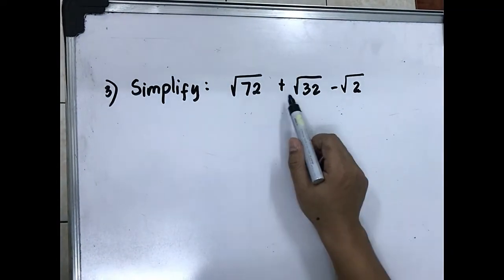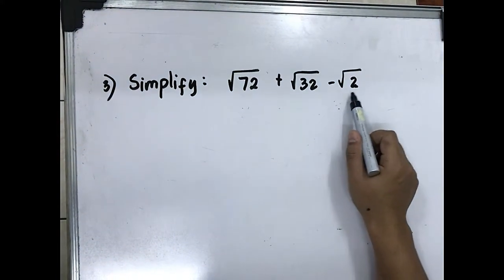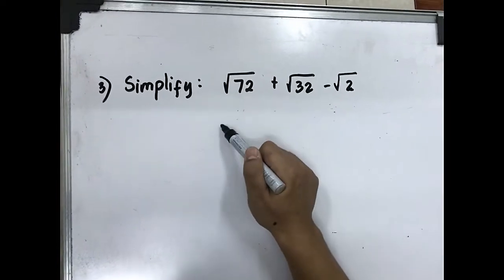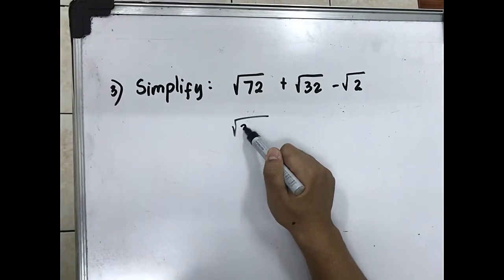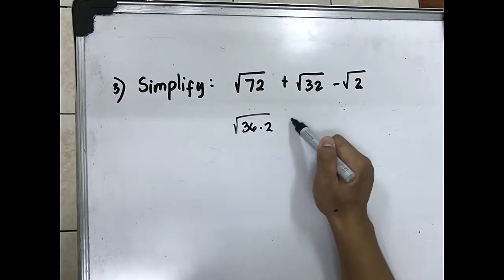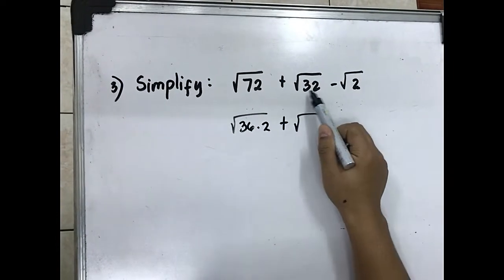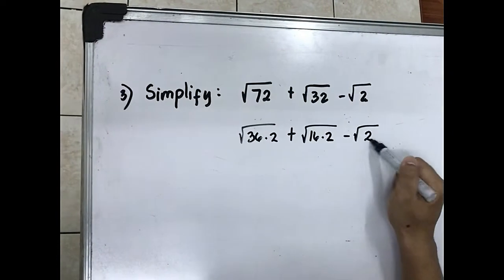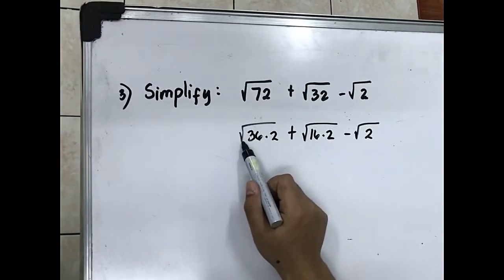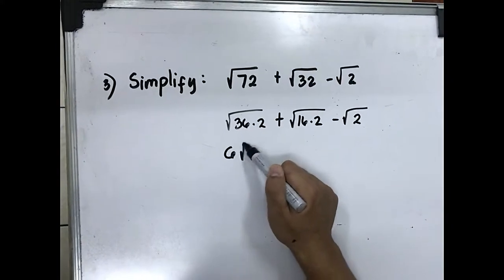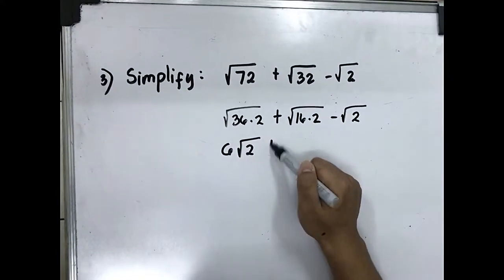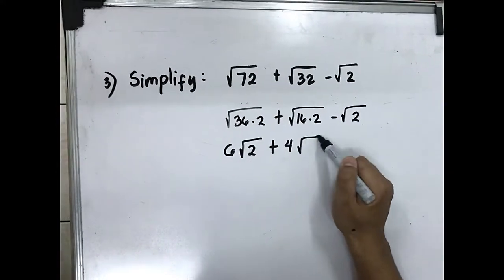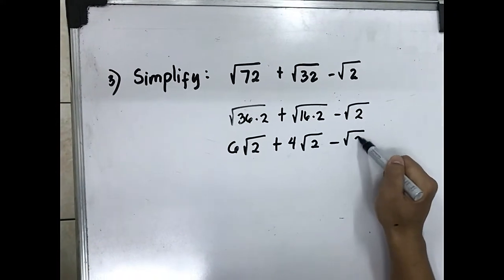Simplify: square root of 72 plus square root of 32 minus square root of 2. Get the factors of 72: that is 36 times 2. Plus factors of 32: 16 times 2. Minus square root of 2. So square root of 36 is 6, plus square root of 16 is 4, minus square root of 2.